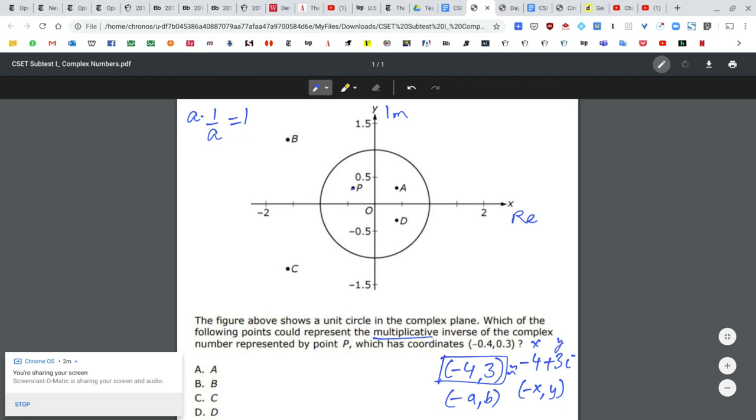In the complex plane, it's represented as negative 4 comma 3, but otherwise, as a regular complex number written as z equals, it's negative 4 plus 3i. So the question is asking for 1 over negative 4 plus 3i. That's really the question.